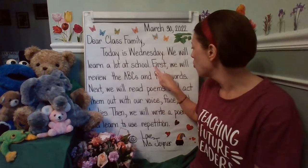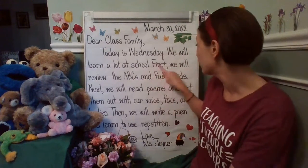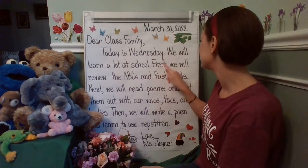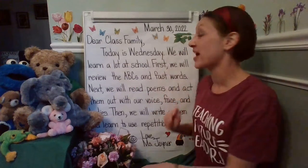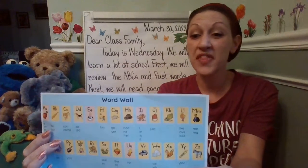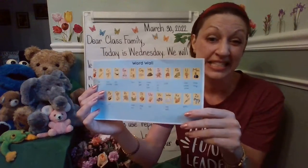Did you notice the capital letter here? Remember, we start every sentence with a capital letter. What letter is this? It is an F, like F for fun. Let's read this telling sentence: 'First, we will review the ABCs and fast words.' So we will be reviewing the ABCs from A all the way to Z — singing the ABC song, making connections, reviewing letters, sounds, and the picture that starts with that beginning letter.